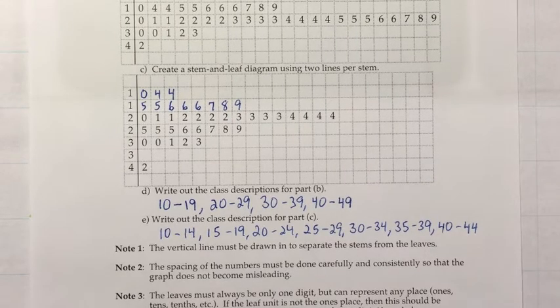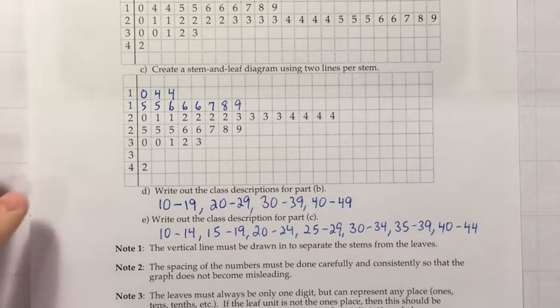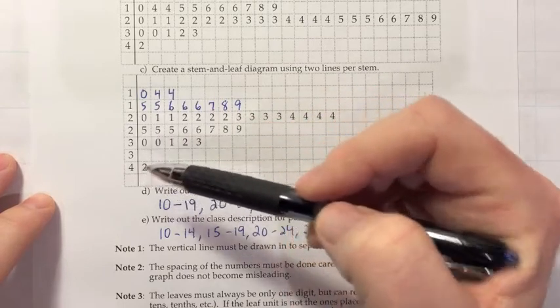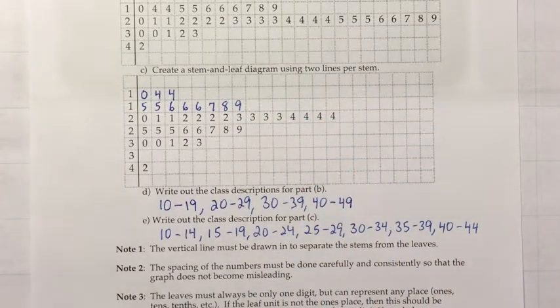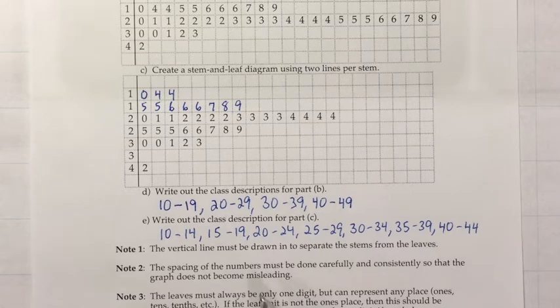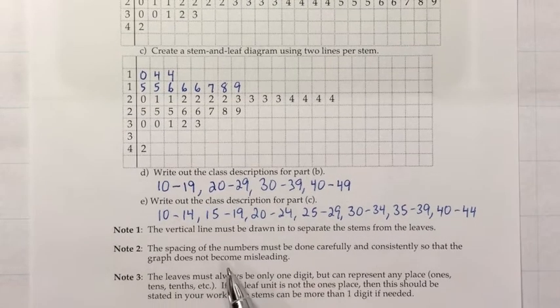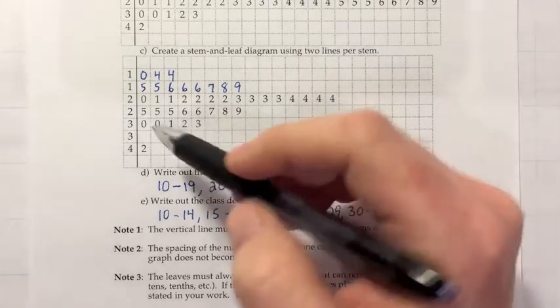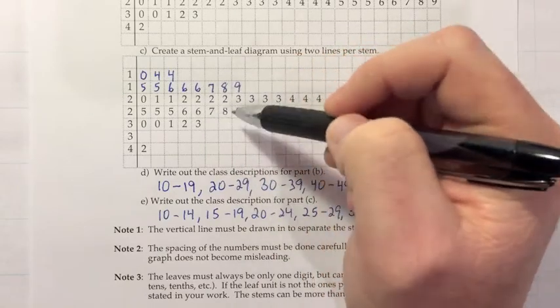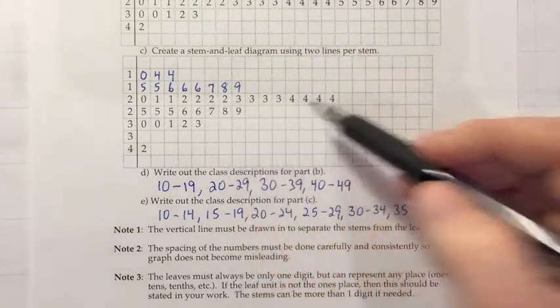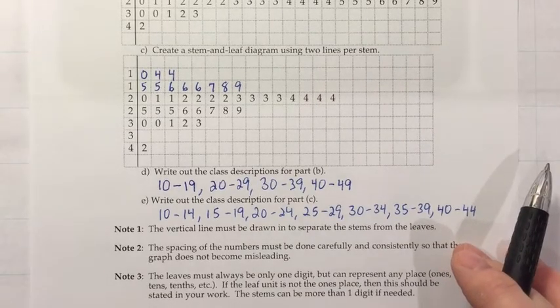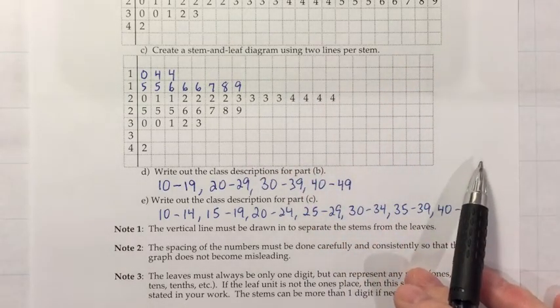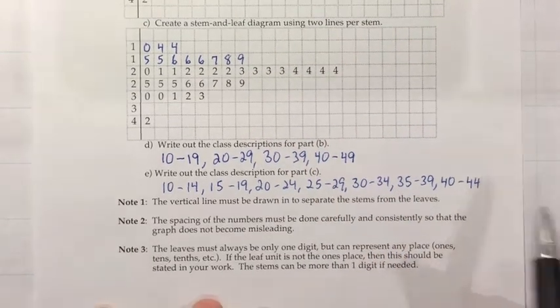And then just a few notes to finish this off. When you're drawing a stem and leaf diagram, you have to draw the vertical line. You can't just imagine it. You have to draw it in so that people can see it like a number line. And note two, the spacing of the numbers must be done carefully and consistently so the graph does not become misleading. So really kind of focus when you're done and look at these vertically and think, do these all line up? It's nice if you have graph paper to make sure the spacing is consistent. Graph paper is not required in the homework, but make sure that if you don't have graph paper, you're making a careful effort to use about the same amount of space between each number.